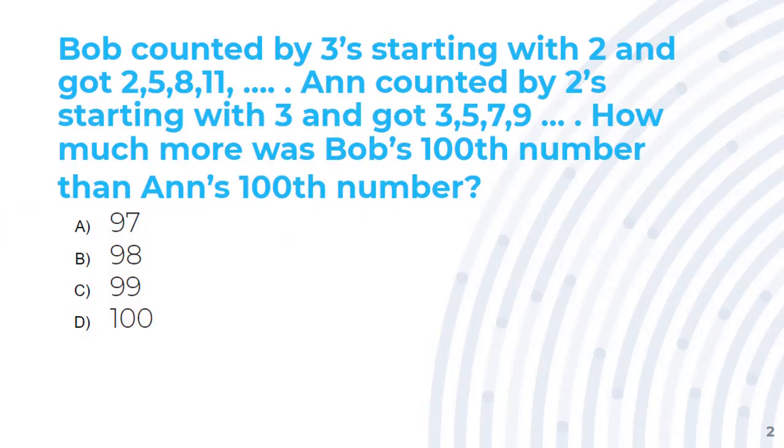Now this question is: Bob counted by 3's starting with 2 and got 2, 5, 8, 11, and so on. Anne counted by 2's starting with 3 and got 3, 5, 7, 9, and so on. How much more was Bob's hundredth number than Anne's hundredth number?